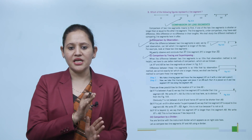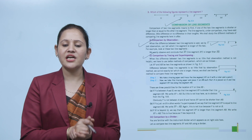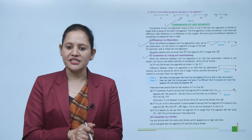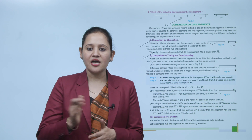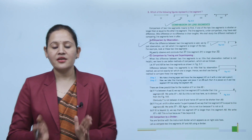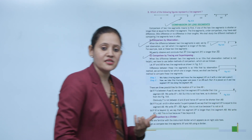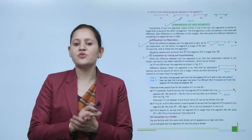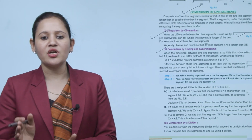If Y is between A and B, we say that line segment XY is shorter than AB, and we write XY < AB. If Y is just on B — that is, if Y superimposes on B — we say that XY is equal to AB, and we write XY = AB.